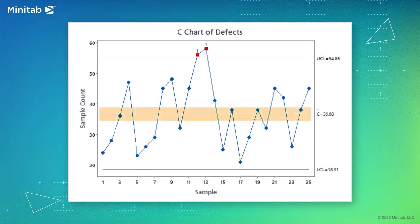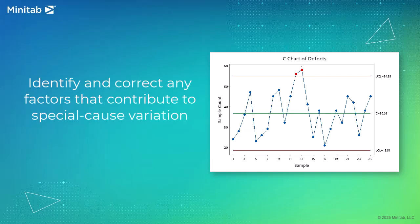The average number of defects per sample is 36.68. Samples 12 and 13 failed Test 1 because they are outside the control limits. Thus, the process is out of control. The engineer should identify and correct any factors that contribute to the special cause variation.